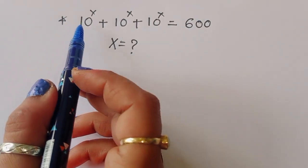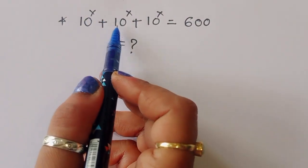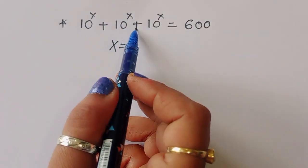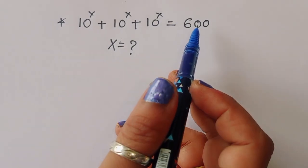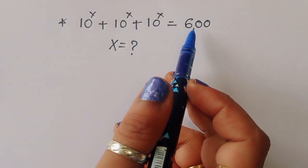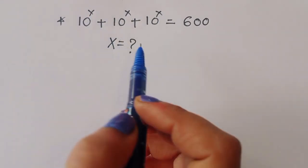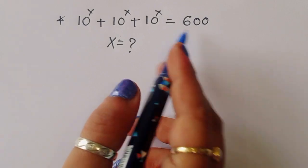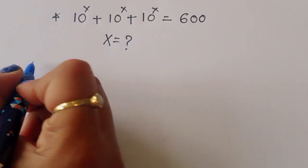The question is: given 10^x + 10^x + 10^x = 600, we have to find out the value of x. Let's see the solution.